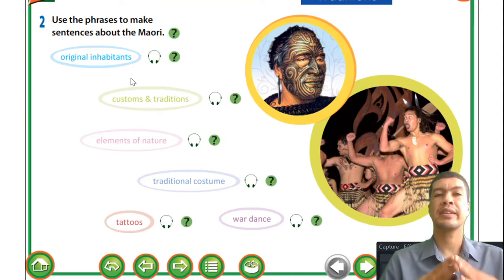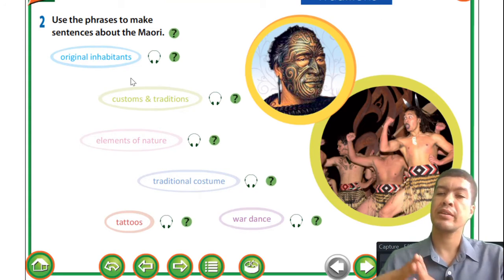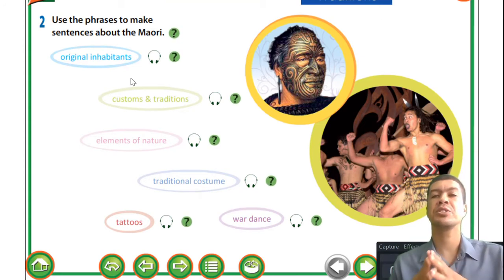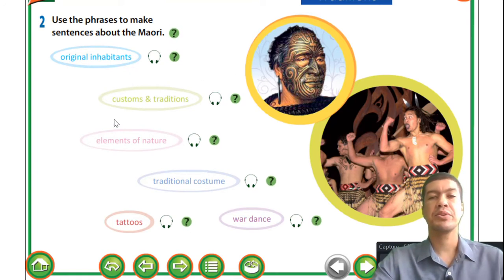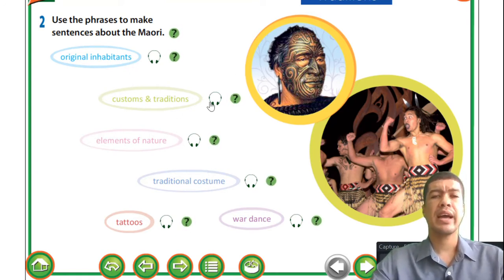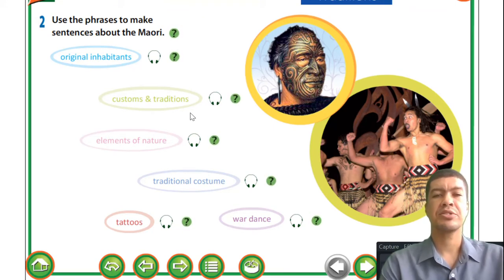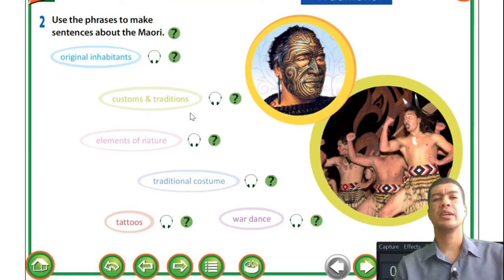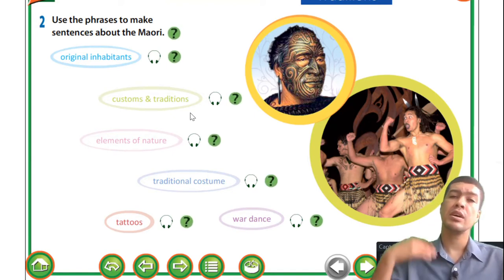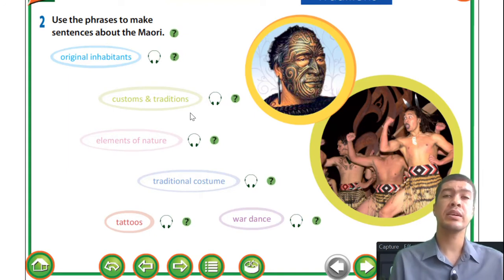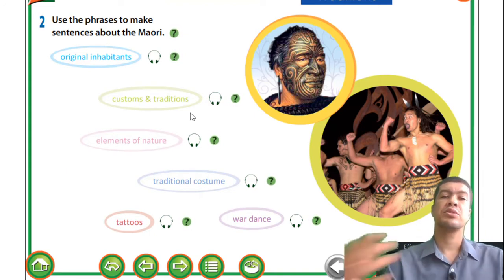You guys are in Vietnam - you guys occupied Vietnam, so you guys are the original inhabitants of Vietnam. The next phrase I want to bring your attention to is 'the Maori still keep their customs and traditions alive.' Customs and traditions is simply the traditions they follow and the customs. Most of you guys are familiar with when you go to the pagoda and you pray - those are the customs and traditions that people follow.